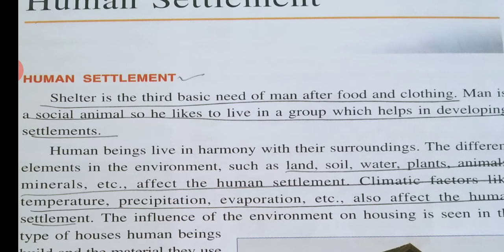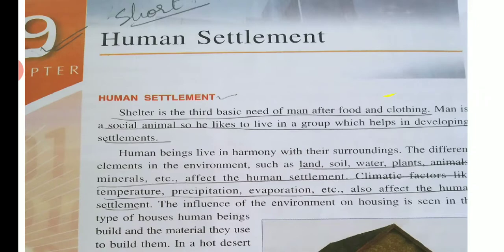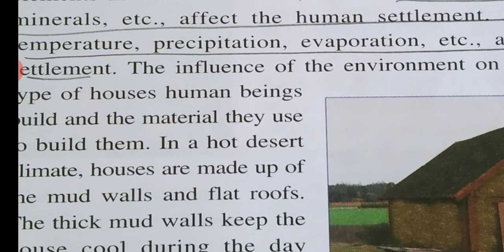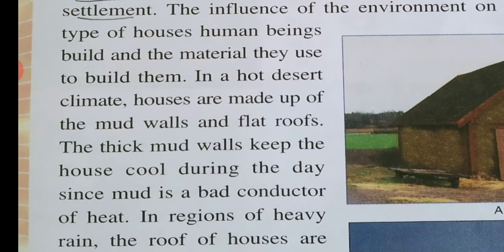There are many factors affecting our environment, namely land, soil, water, plants, animals, and minerals. All these things are affected by climatic conditions such as evaporation, condensation, and temperature - everything influences our life. For example, in hot deserts, houses have mud walls and flat roofs because thick mud walls are bad conductors of heat and keep the temperature cool.